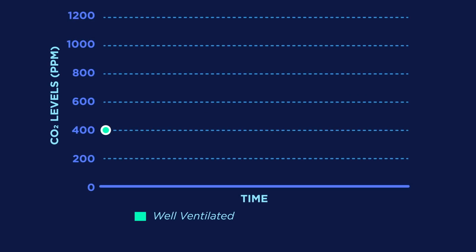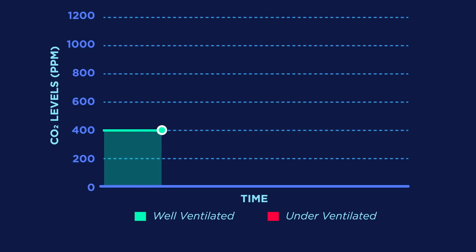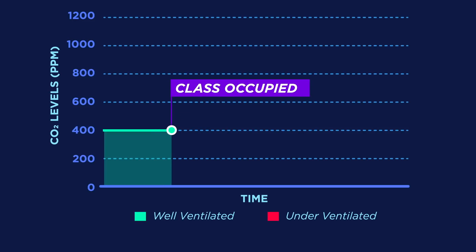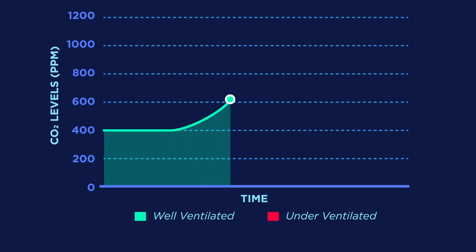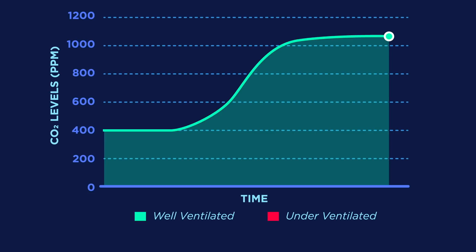Monitoring CO2 levels is a useful and convenient way to monitor ventilation. You can see here how CO2 concentrations change throughout the day in a classroom. When the classroom is empty at the beginning of the day, CO2 levels are about 400 parts per million, or ppm, which is the outdoor air concentration of CO2. When students come in, the level of CO2 will rise. In a well-ventilated classroom, it will level off below 1,100 ppm.